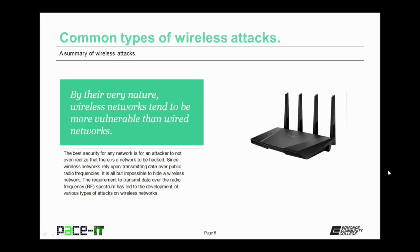By their very nature, wireless networks tend to be more vulnerable than their wired network cousins. The best security for any network is for a hacker to not even realize that there is a network there to be hacked. Since wireless networks rely upon transmitting data over public radio frequencies, it is all but impossible to hide a wireless network from an attacker. The requirement to transmit data over the RF spectrum has led to the development of various types of attacks on wireless networks. So let's discuss some of those now.